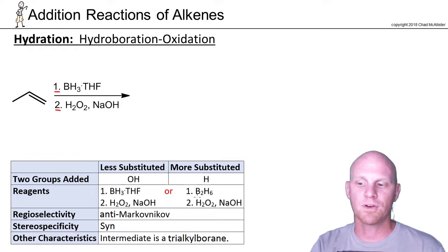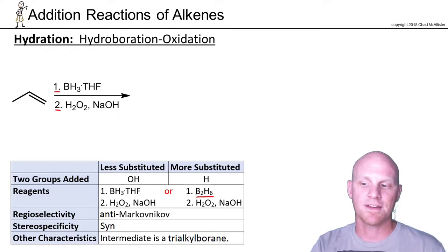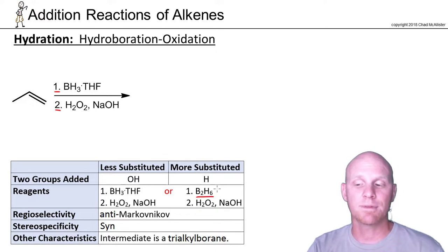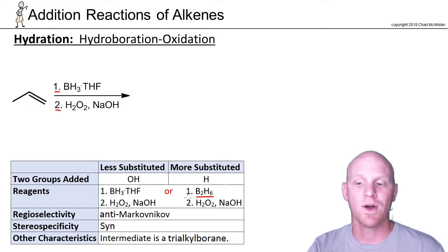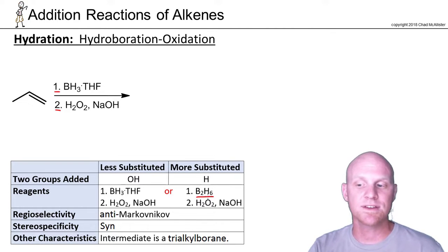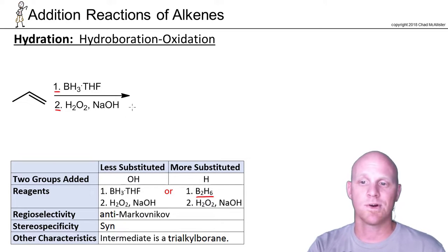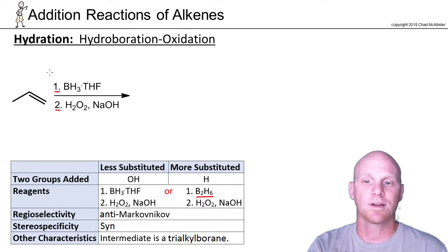You can use pure BH3, but it dimerizes in a funky way. That dimer is B2H6, so instead of writing it as BH3, it would most commonly be written as B2H6. Whether you see BH3·THF or B2H6, it's the same reaction as far as step one goes.